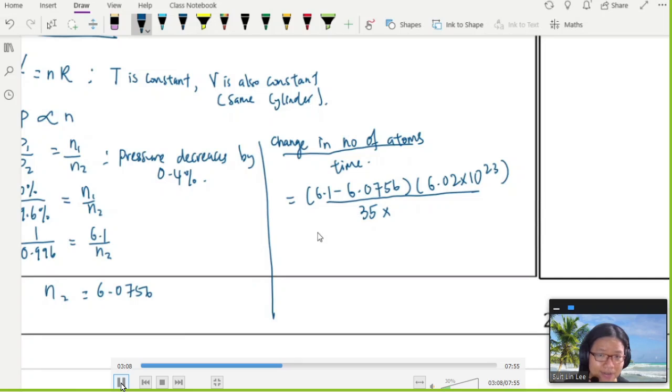Divide by 35 days. We need to change to seconds: times 24 hours and 3600 seconds per hour.